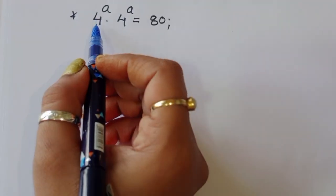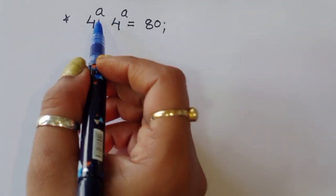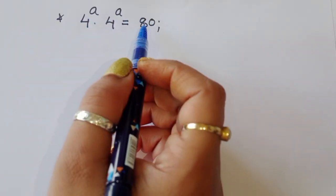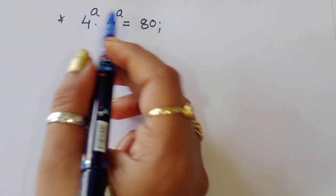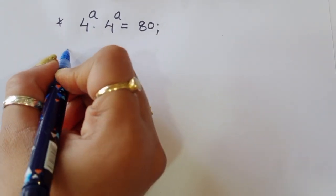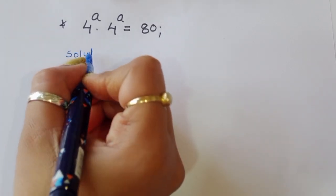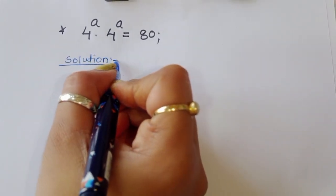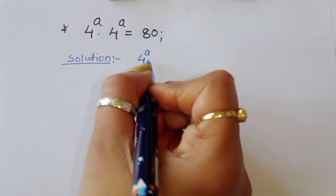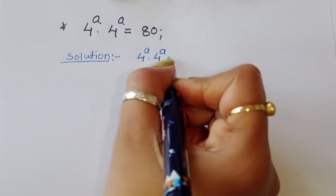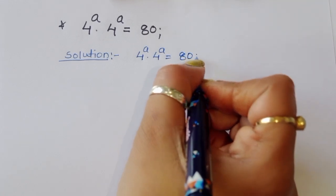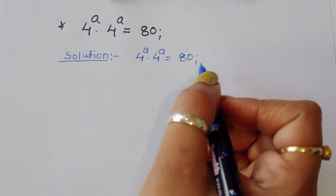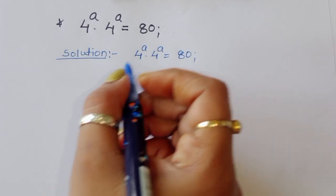The question is: given 4 power a times 4 power a is equal to 80, we have to find out the value of a. Let's say solution: 4 power a times 4 power a is equal to 80. This is the question, so we can use a formula here.